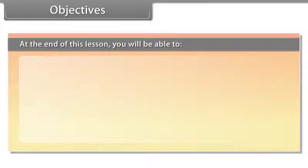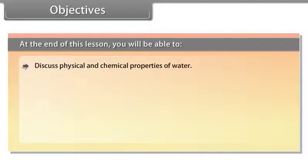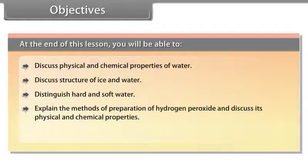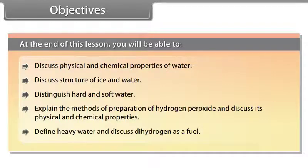At the end of this lesson, you will be able to discuss physical and chemical properties of water, discuss structure of ice and water, distinguish hard and soft water, explain the methods of preparation of hydrogen peroxide and discuss its physical and chemical properties, define heavy water, and discuss dihydrogen as a fuel.